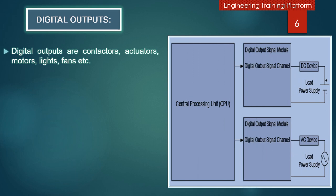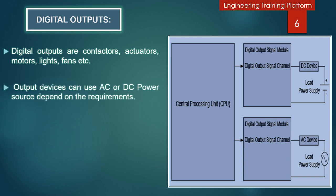Now we will discuss about digital outputs. Digital output devices include lights, solenoid valves, actuators, motors, starters, valves, and so on. Some output devices use DC and others use AC. There are three categories of digital output signal modules: DC modules, AC modules, and relay modules.